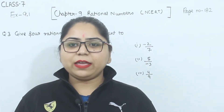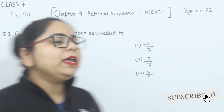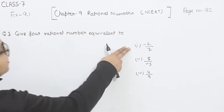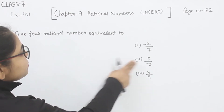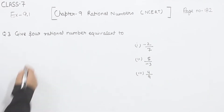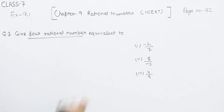Hello everyone, this is Preeti. We are here with another question of Exercise 9.1, page number 182, question number 3. Give 4 rational numbers equivalent to — we have 3 parts given: first one is minus 2 by 7, second one is 5 by minus 3, and the third one is 4 by 9. So we have to write 4 rational numbers equivalent to the given rational numbers.